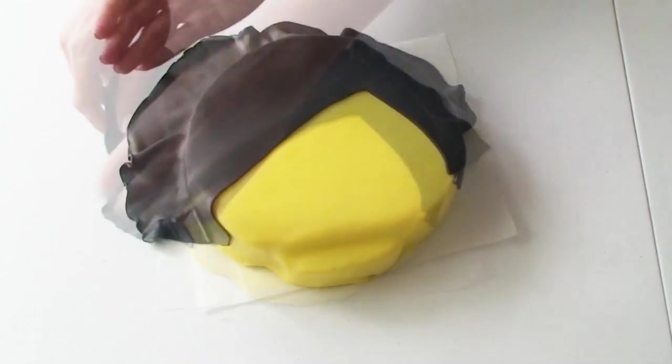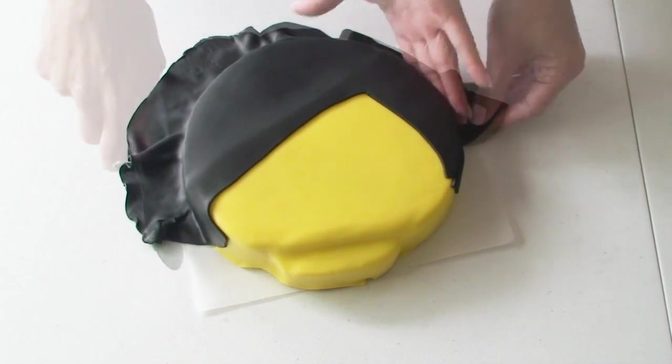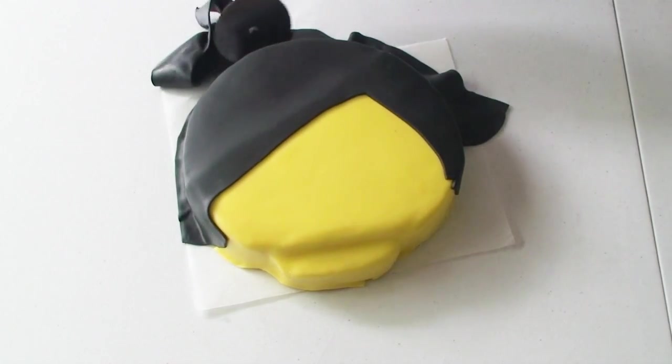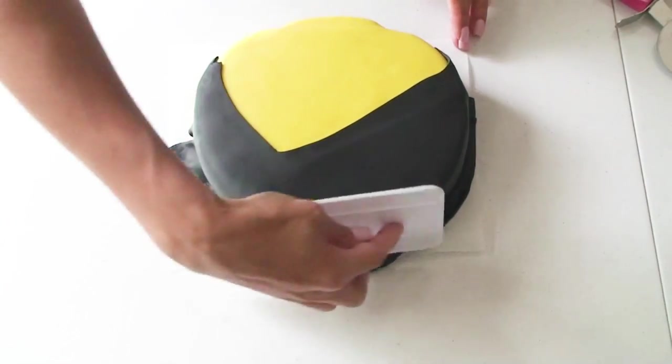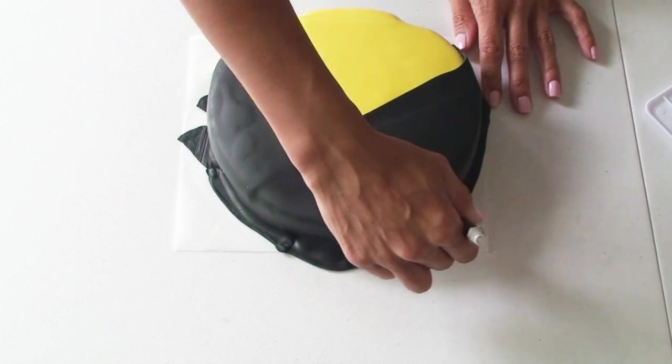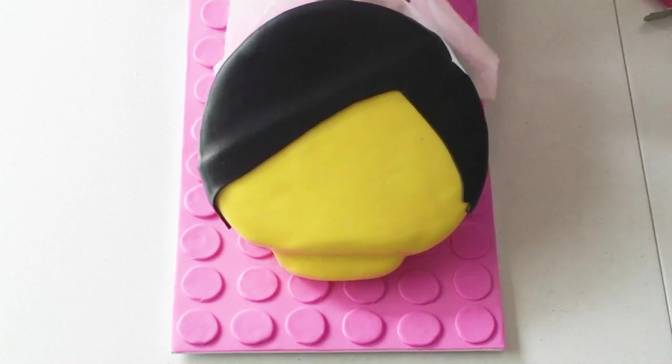Open up the fondant around the edges and smooth it down the sides, then trim off the excess using the pizza cutter first and continue smoothing with the cake smoother, then a final cut with the blade right up towards the edge of the cake. Transfer the cake onto the cake board.